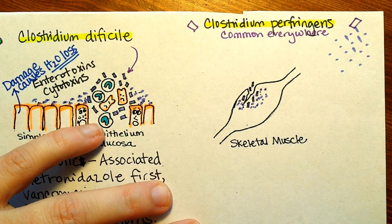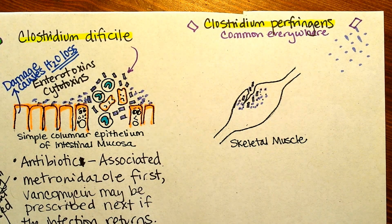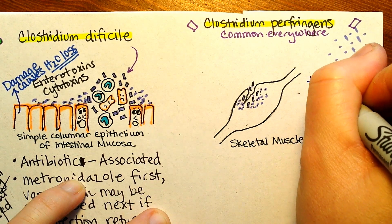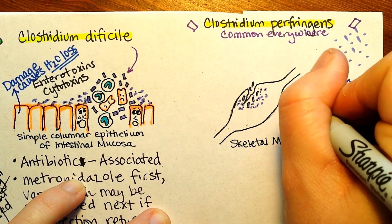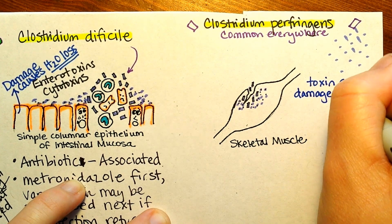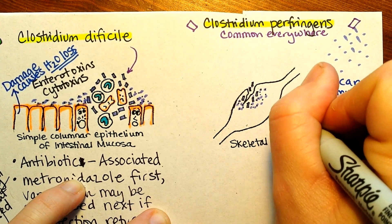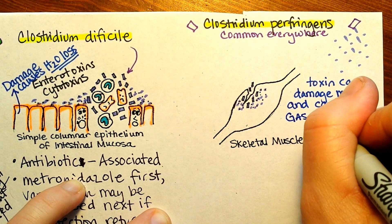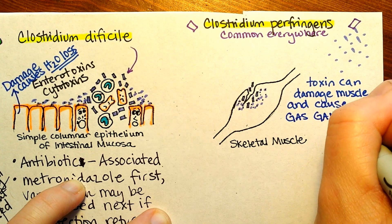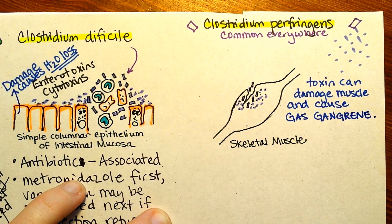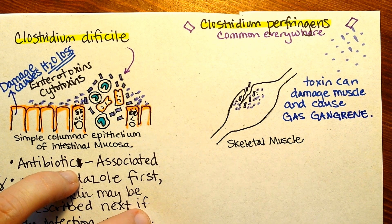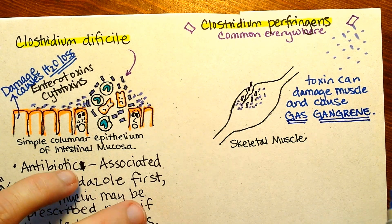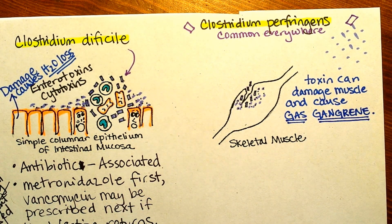The toxins will break down the muscle tissue and bubbles will start to form in the muscles. The toxin can damage muscles and cause gas gangrene — the tissue is rotting and bubbles are forming from the metabolic byproducts of the bacterial growth. So gas gangrene is one of the problems.